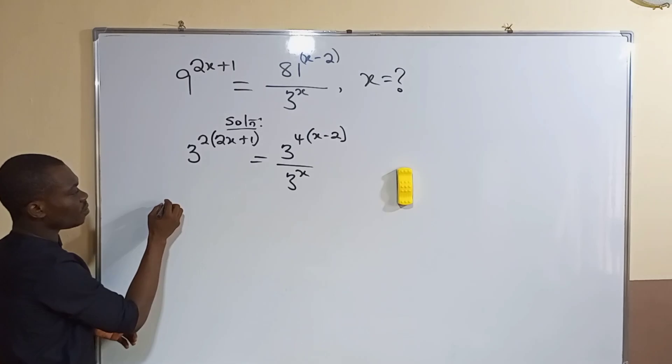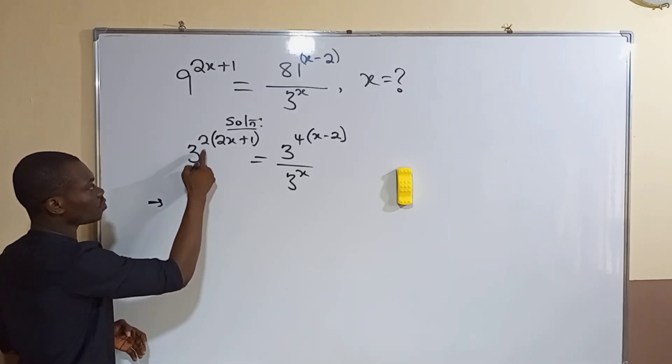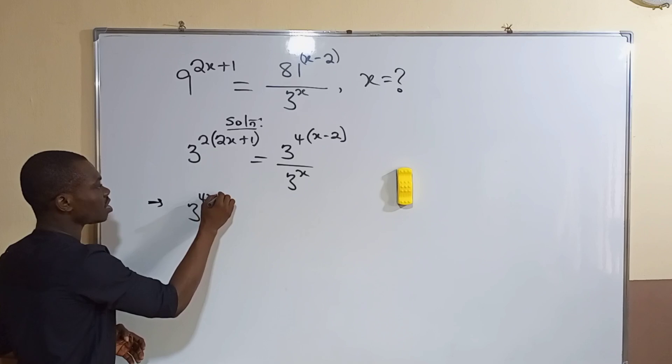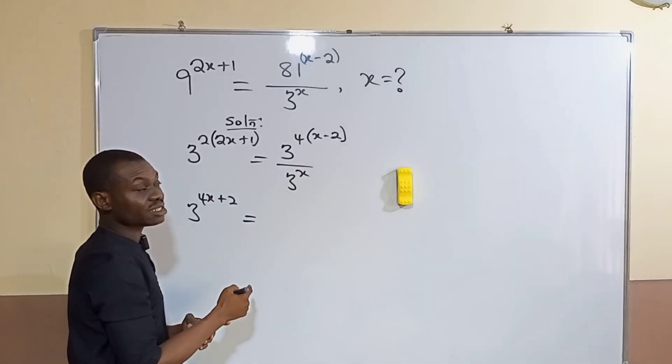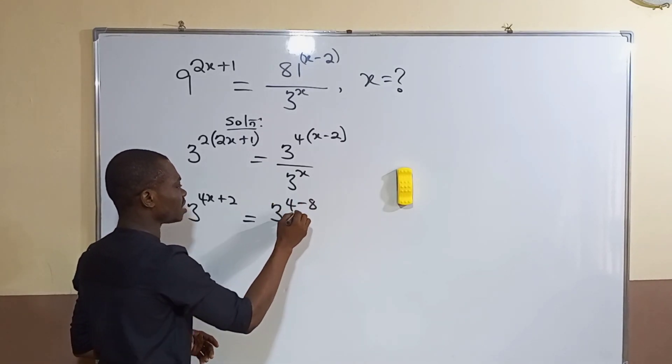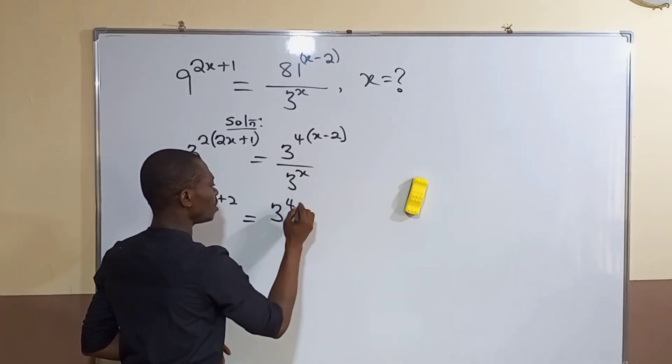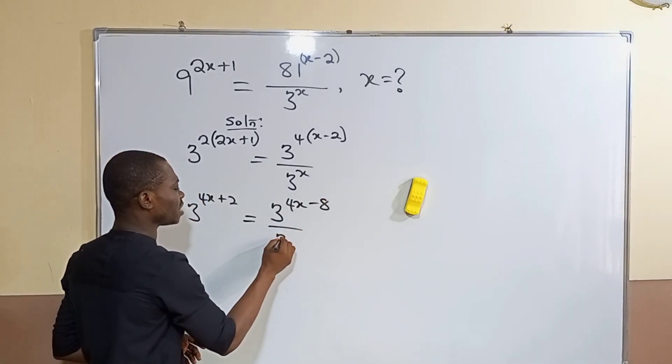I'm done with reducing everything to the same base. I open up the brackets for the simplification. That's going to give me 3 raised to power—this will give us 4x plus 2—is equal to, on this other side, if I open the bracket I will have 4x minus 8, so 4x minus 8, and that is over 3 raised to power x.